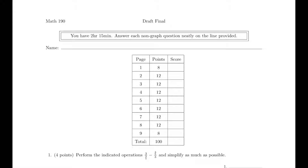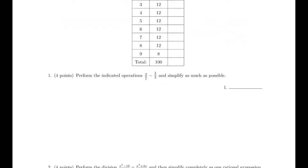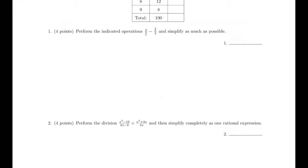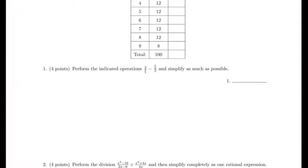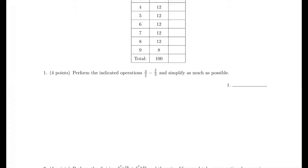So let's call this our solution file. For the first problem we are going to be performing the indicated operation and simplifying as much as possible. First, rewrite this compound fraction. Remember keep-change-flip, so you have 3 times 5 over 3, minus the second one where we also do keep-change-flip, giving us 3 over 5 times 1 over 3.